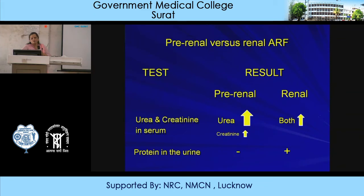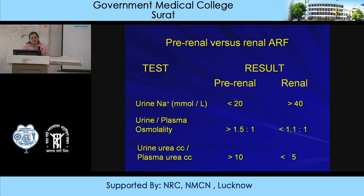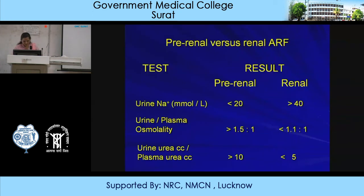Testing can differentiate pre-renal from acute renal failure: in pre-renal, urea and creatinine increase; in renal both increase but not as much. Protein in urine is absent in pre-renal but present in renal conditions due to tubular damage, with increased hyaline and granular casts. Urine sodium is less than 20 mEq/L in pre-renal and greater than 40 mEq/L in renal failure. Plasma osmolality ratio is greater than 1.5:1 in pre-renal and less than 1.1:1 in renal. Urine-to-plasma urea ratio is greater than 10 in pre-renal and less than 5 in renal failure.